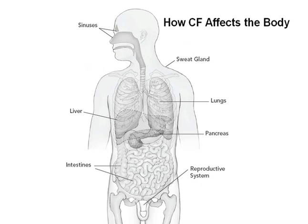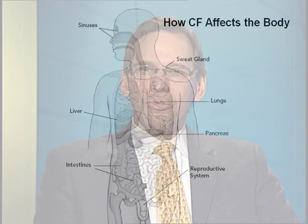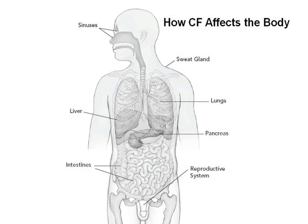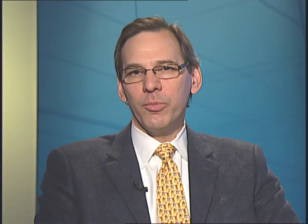In the sweat duct, sodium and chloride are not reabsorbed so that the amount of salt in the sweat is elevated, and this is used as a diagnostic test for cystic fibrosis. The GI tract, comprised of the pancreas, intestines, and liver, are also affected in CF. About 80% of patients with cystic fibrosis will have pancreatic insufficiency because the small ducts in the pancreas are blocked and destroyed, and pancreatic enzymes are not produced to digest food. Severe liver disease can occur in a small percentage of patients as well.